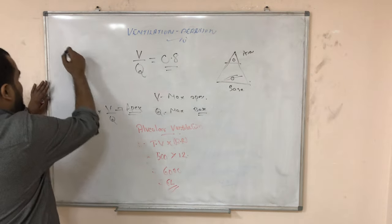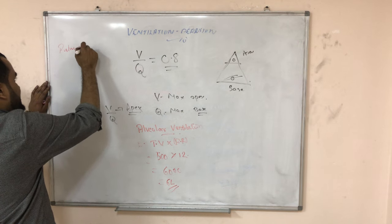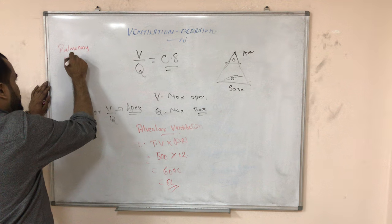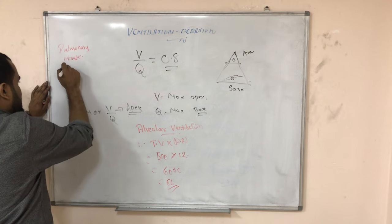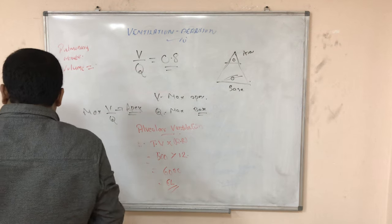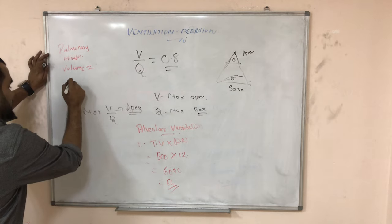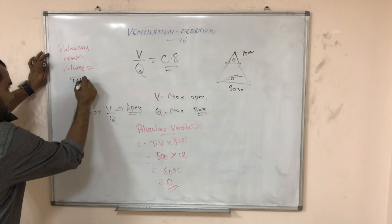Now there is something nice - Pulmonary Minute Volume. This pulmonary minute volume is equal to TV minus dead space into respiratory rate.